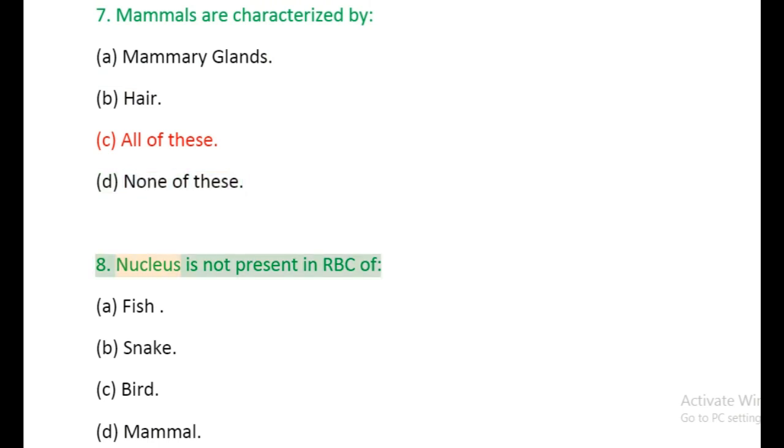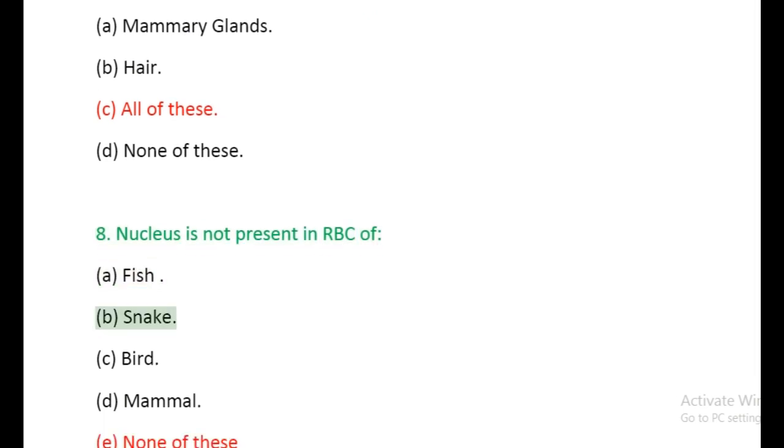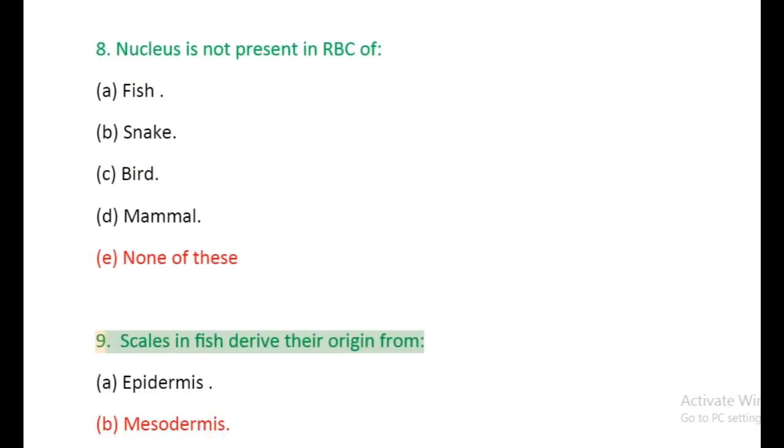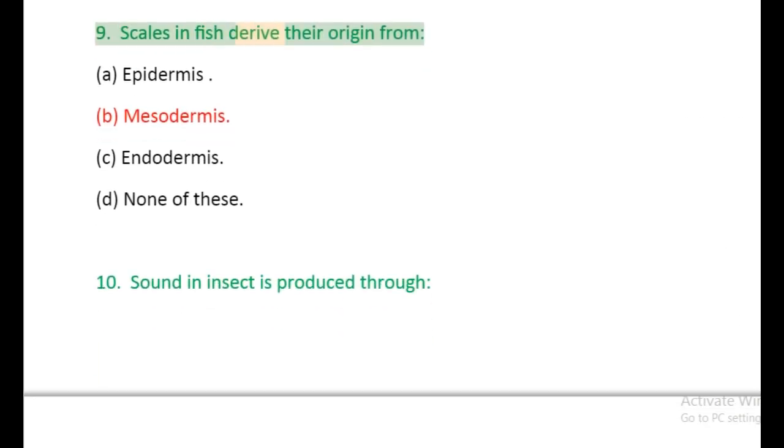Question 8: Nucleus is not present in RBC of: (a) Snake, (b) Bird, (c) Mammal, (d) None of these. Question 9: Scales in fish derive their origin from: (a) Epidermis, (b) Mesodermis, (c) Endodermis, (d) None of these.